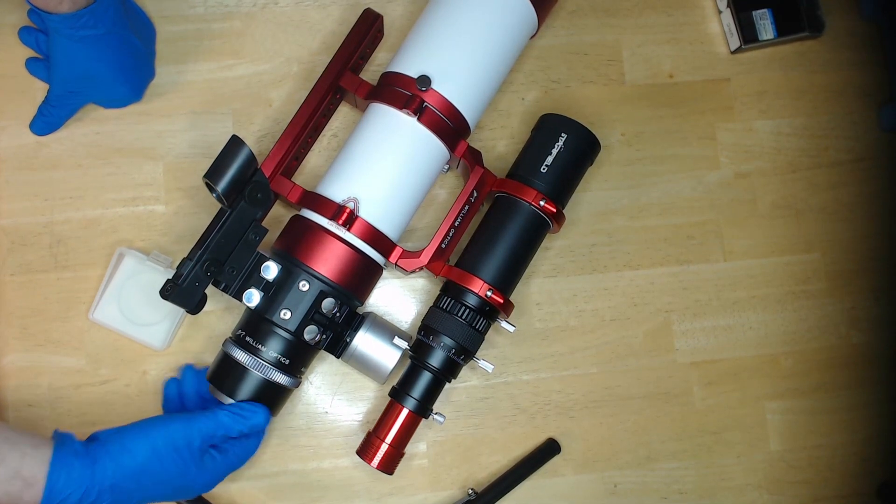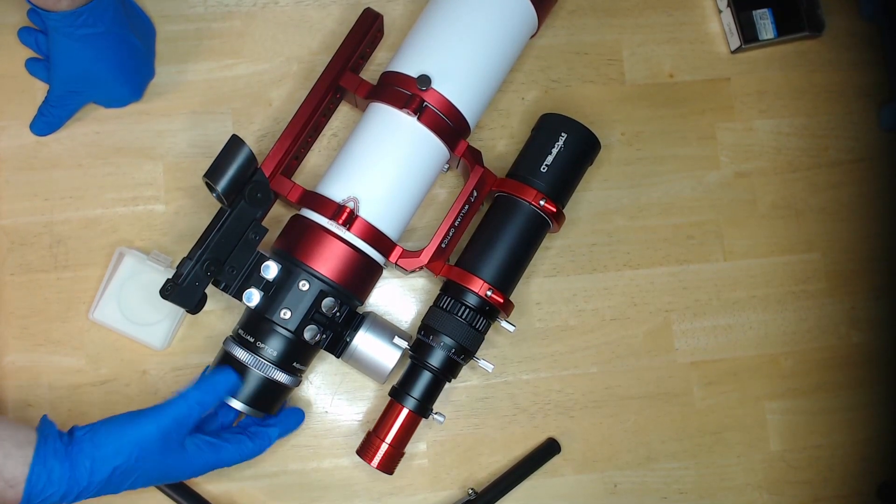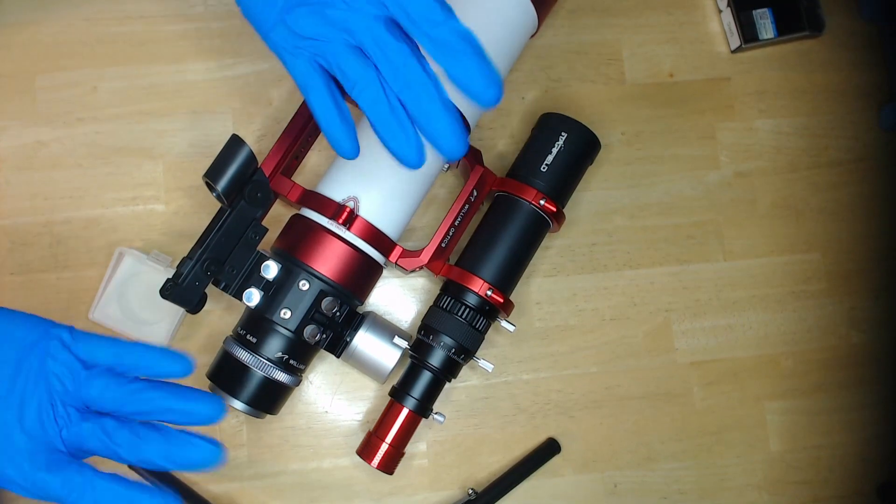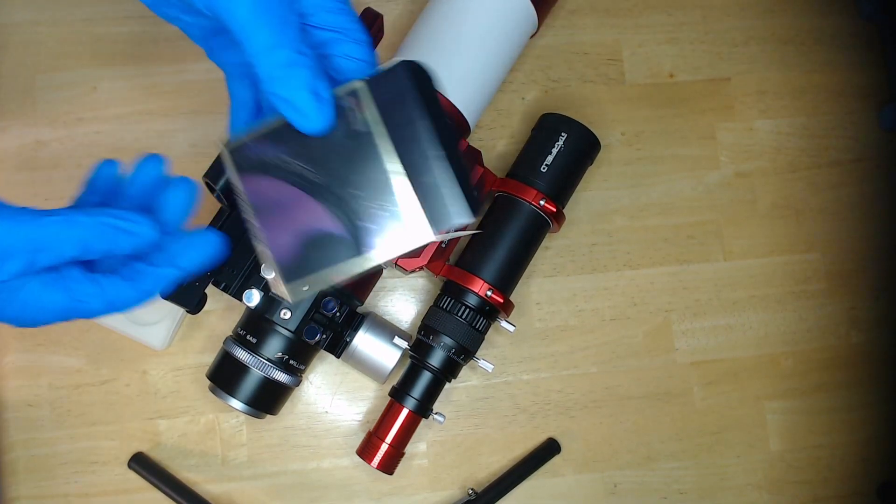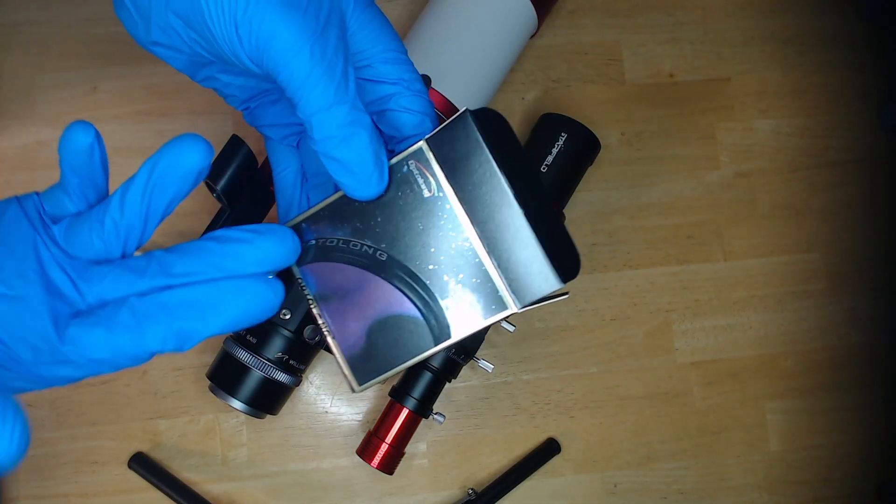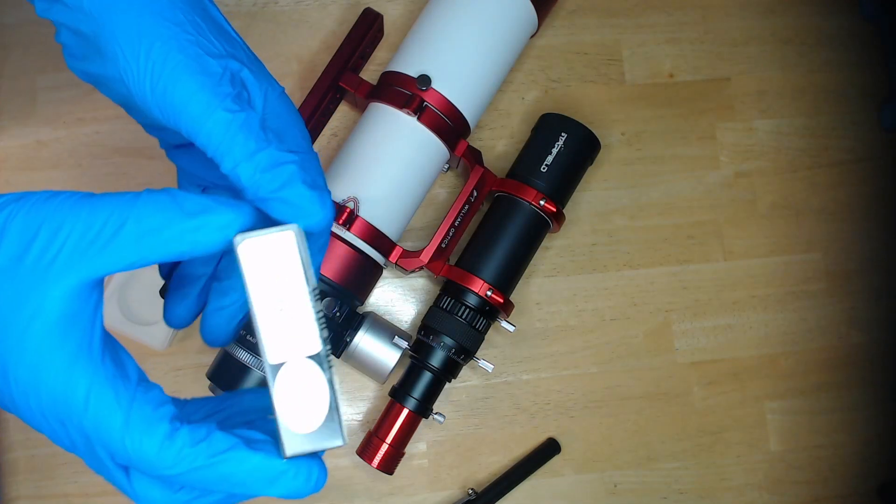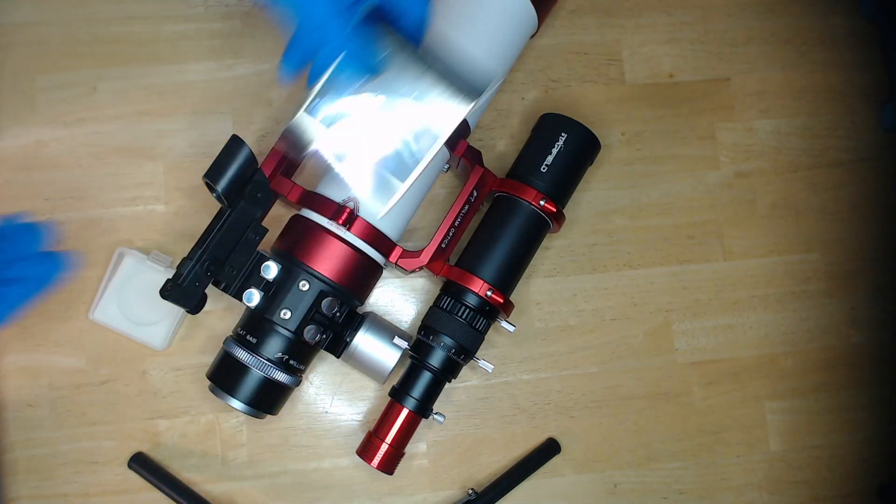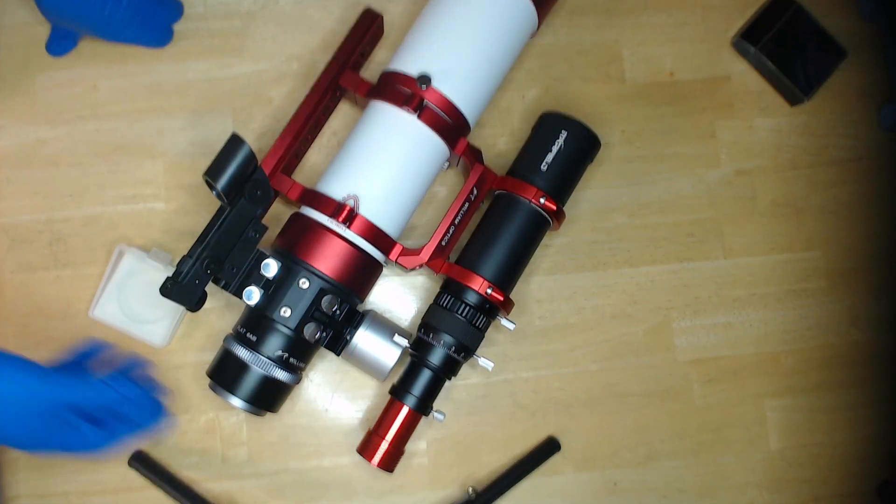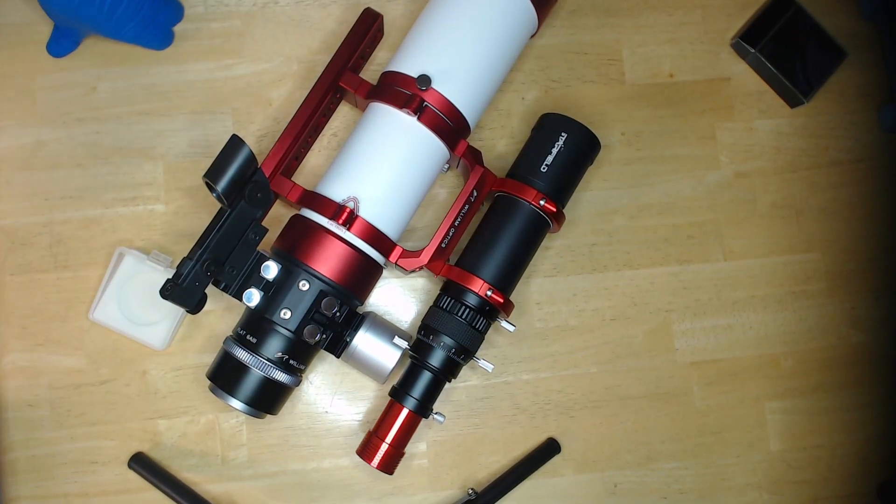We are all done. You now have a filter installed in your field flattener for astrophotography. Congratulations! If you want to change the filter, you'll need to disassemble the whole thing again and swap it out. That's why I recommend filter drawers or filter wheels instead.